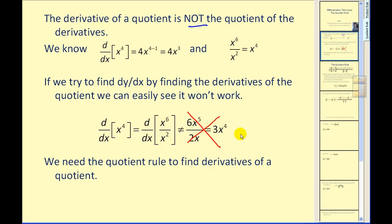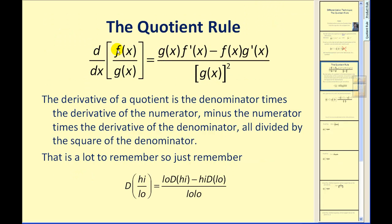We need to find another method, and the method we're going to use is called the quotient rule. If we label the numerator function f of x and the denominator function g of x, the derivative is equal to the denominator times the derivative of the numerator minus the numerator times the derivative of the denominator, all divided by the denominator squared.